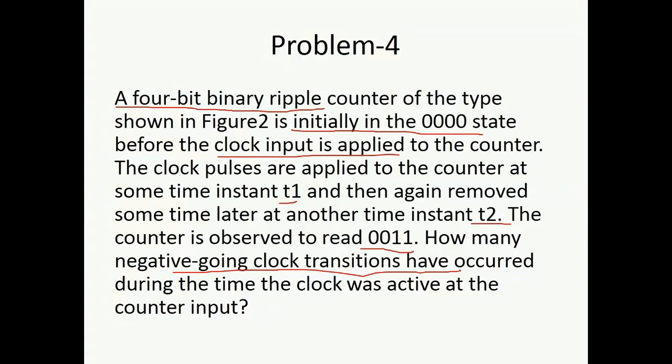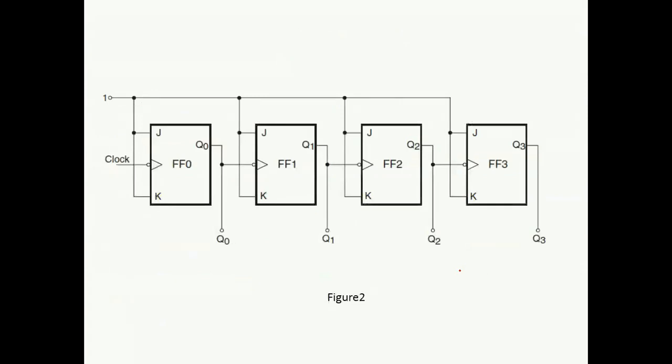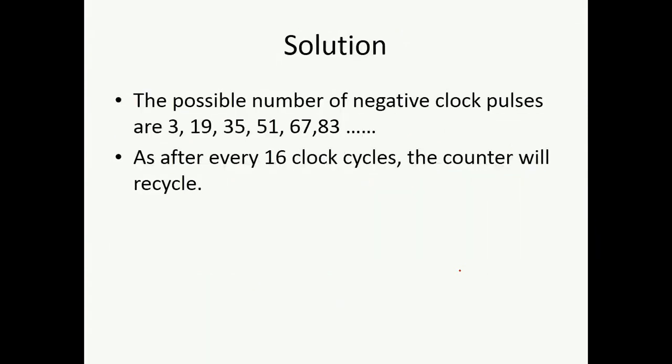How many negative going clock transitions have occurred during the time the clock was active at the counter input? One thing is for sure, my counter is going to count 0, 1, 2, 3. But the question is, my counter can count 0, 1, 2, 3, 4, 5, 6, 7, 8, 9 till 15, once again 0, 1, 2, 3. It has not been mentioned when we are observing 3. So the possible answers for this question are: minimum 3 negative clock cycles, then 19 (that is 3 plus 16), then 35, 51 and so on. That depends on the question. Otherwise, we have the possible number of outputs with us.